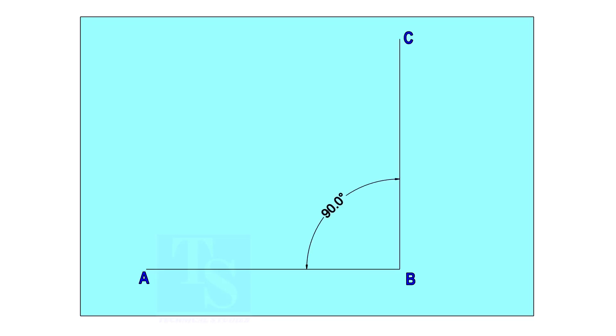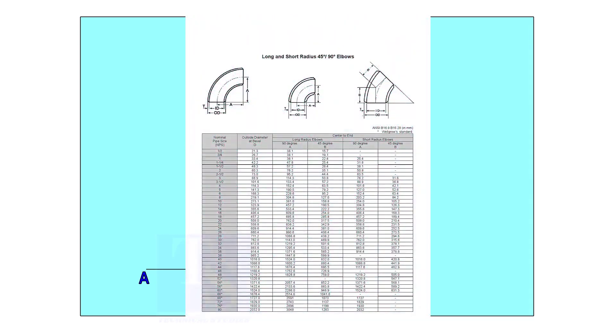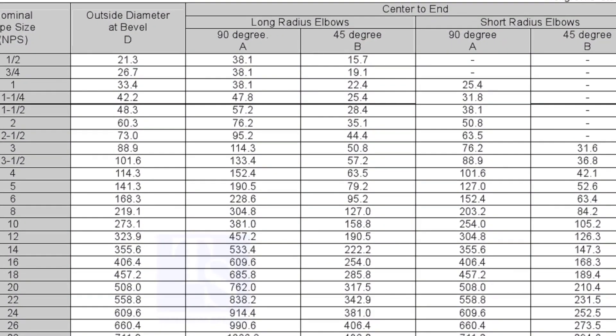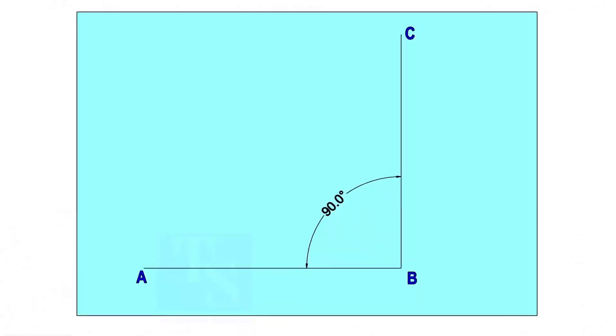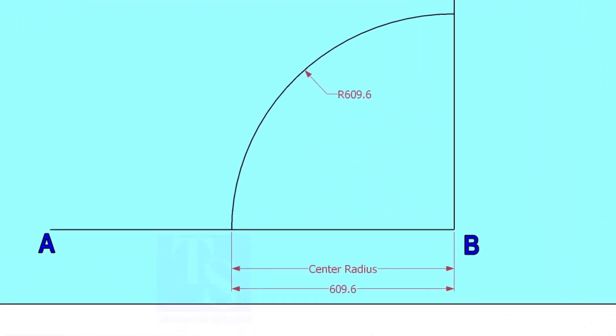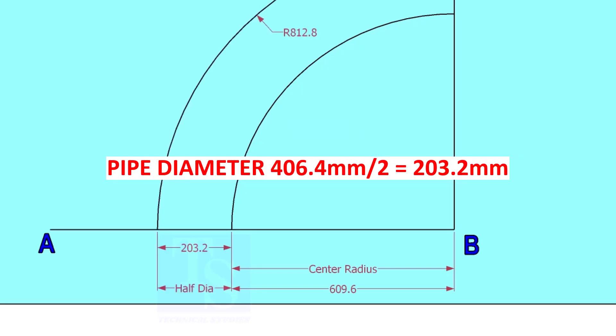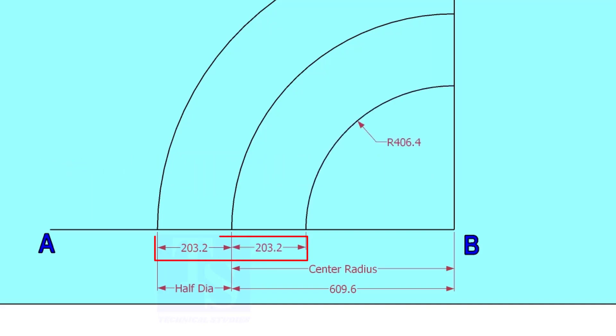Mark line AB and a perpendicular line BC. Let us check the center radius of 16-inch long radius elbow. Draw an arc with the center radius 609.6 millimeters. Mark the half OD arcs on both sides of the center line.